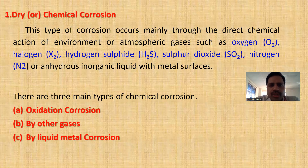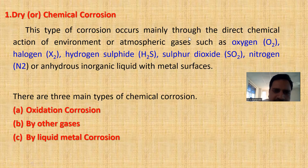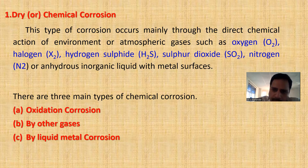Dry corrosion occurs mainly through direct chemical action of environmental or atmospheric gases such as oxygen, halogens (chlorine, bromine, iodine), hydrogen sulfide, sulfur dioxide, nitrogen oxides, and anhydrous inorganic liquids with metal surfaces. These gases are also called corrosive gases. If these gases are present in the environment, the metals will easily undergo corrosion. In the absence of these gases, the metal will still undergo corrosion, but the rate of corrosion will be very less.